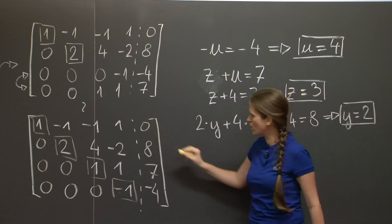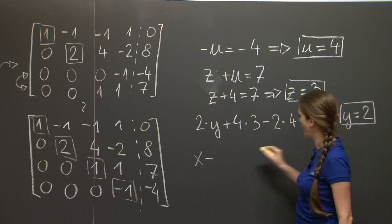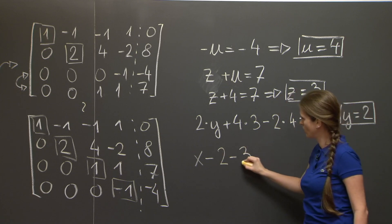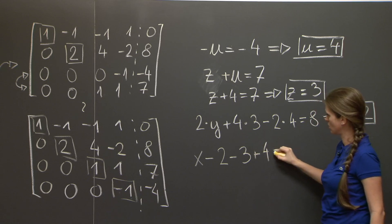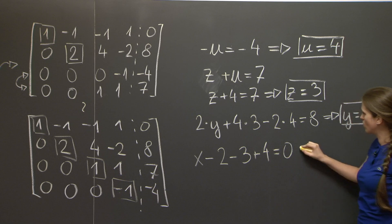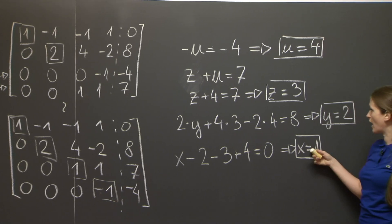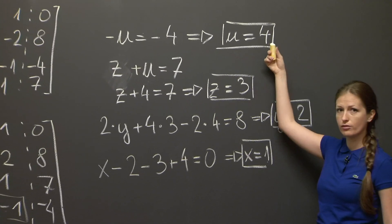And finally, the first equation reads x minus y minus z plus u equals 0, or x equals 1. And this is our solution: x, y, z, and u equal 1, 2, 3, and 4.